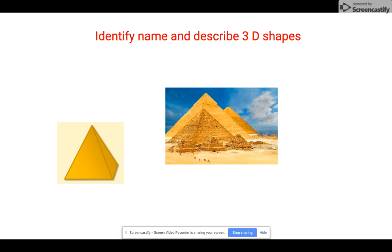Here is another 3D shape. You will know the front shape—the 2D shape is a triangle—but when it's put together like this, it becomes a 3D shape. This is an example of a 3D shape in real life. It's called a pyramid.